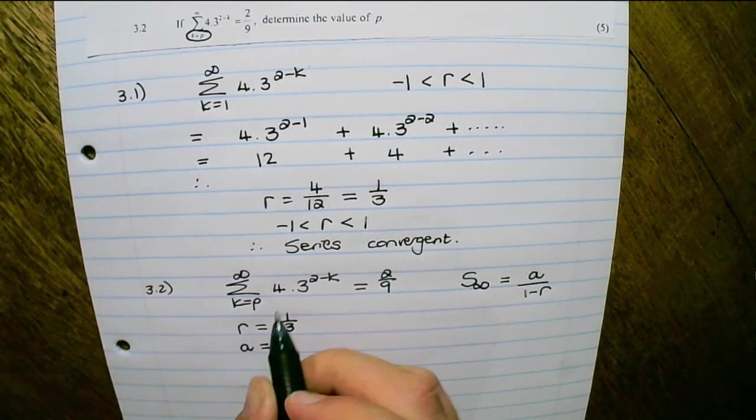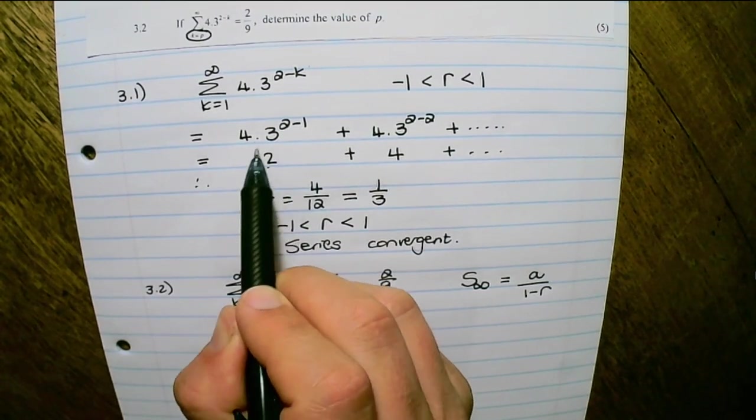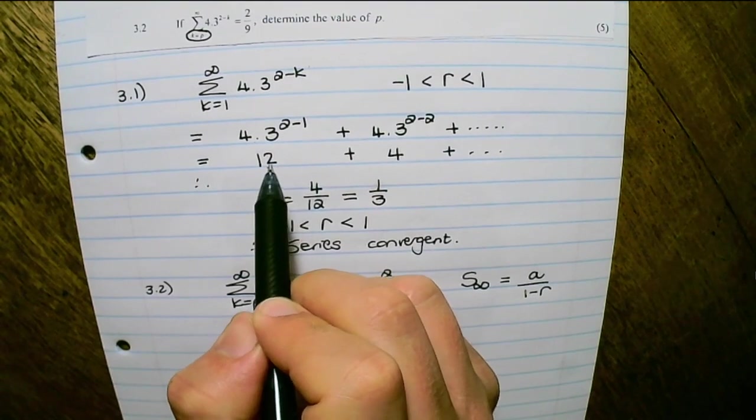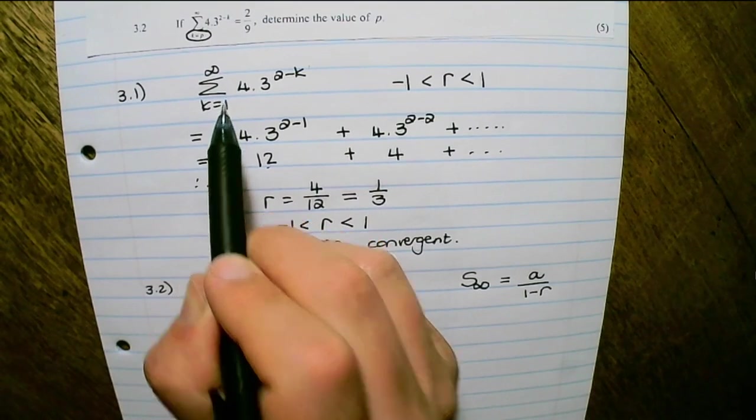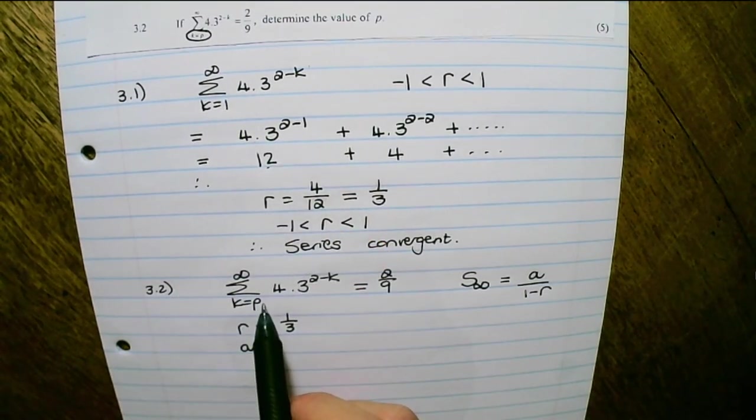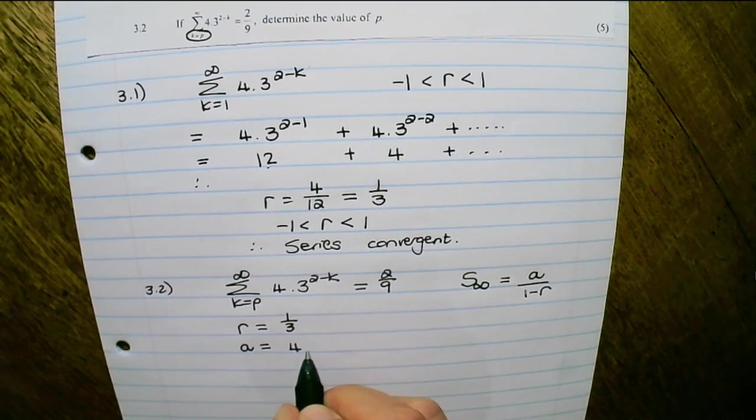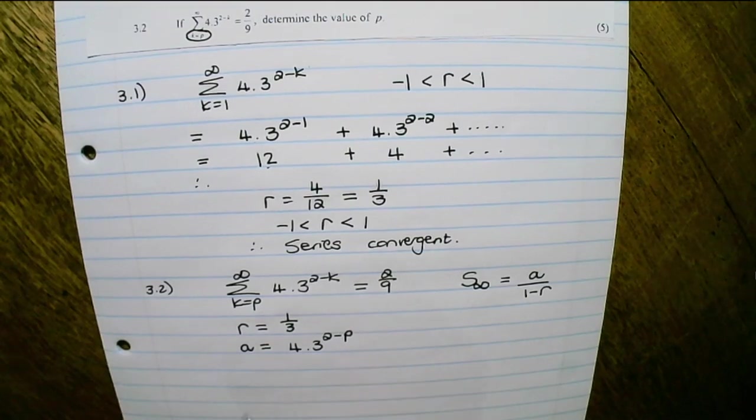But the a value, or the first term, would not necessarily be equal to 12. Because in our previous question, our substitution started with 1 in the lower parameter. But in this second question, the substitution starts at p, and we want to find p. So a would be 4 times 3 to the power of 2 minus p, which is our first substitution.